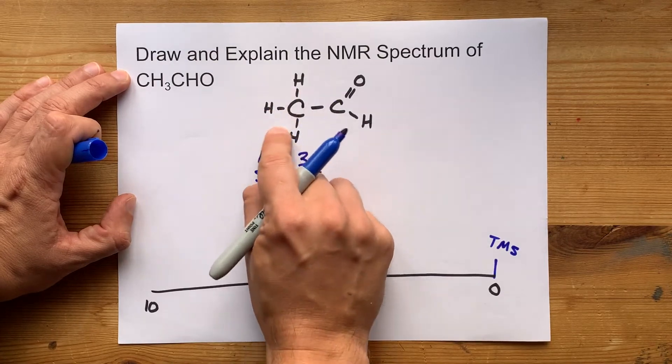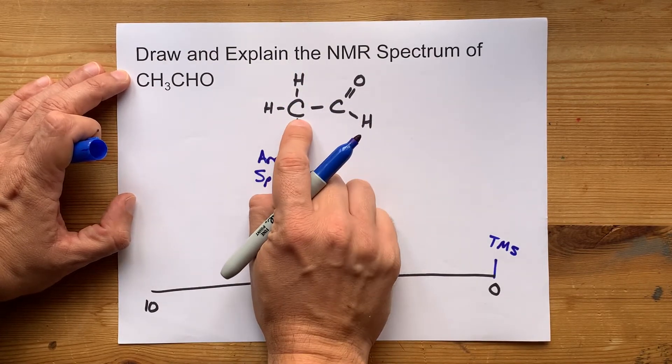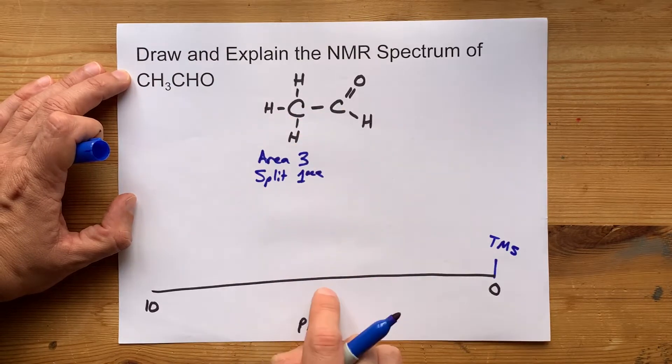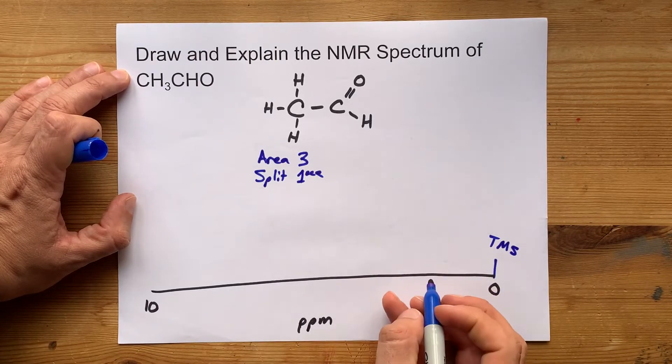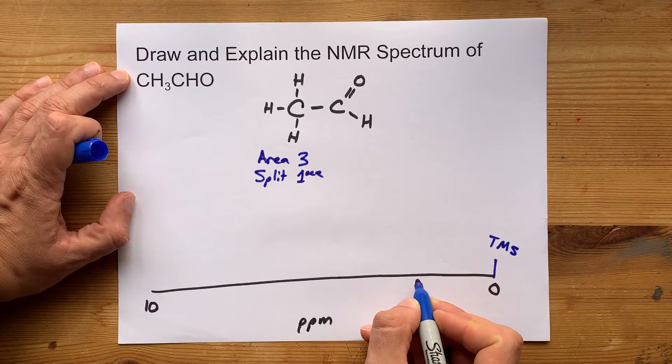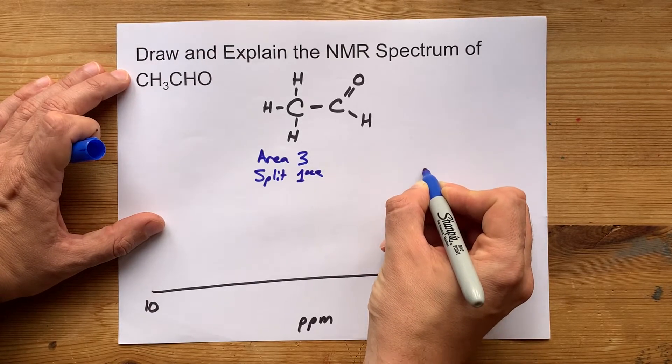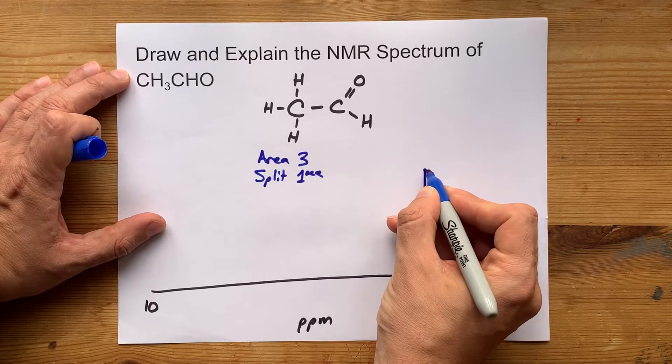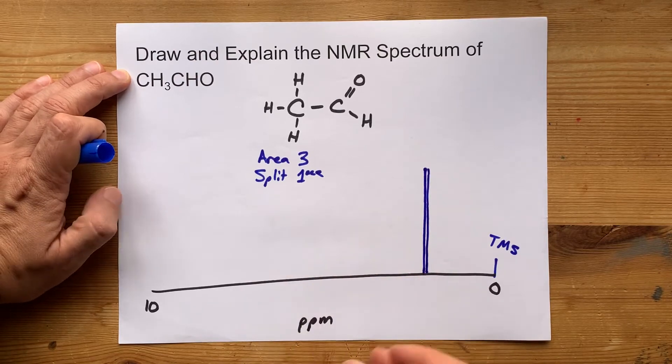Now, because they're methyl hydrogens and this carbon isn't directly bonded to anything with an electronegative atom on it, it's going to be generally low on the ppm scale. When I looked it up, it was around two, slightly higher than two. So you're going to want one tall peak that gets split once. When it splits once, it ends up breaking up into two equal-sized peaks that are separated by some amount.